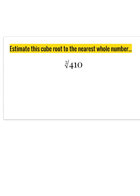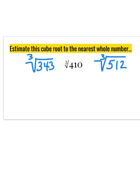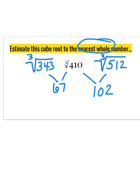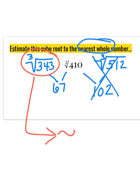For the final one, go ahead and pause, work this out, and come back when you're ready to check. The cube root of 410 is not a perfect cube, but I can estimate it using perfect cubes on either side. 410 is between the cube root of 343 and the cube root of 512. 410 is exactly 67 spaces away from 343, and 102 spaces away from 512. So my estimate for the cube root of 410 is closer to the cube root of 343, which is approximately 7.